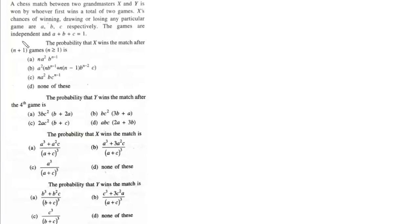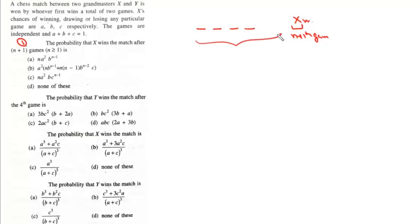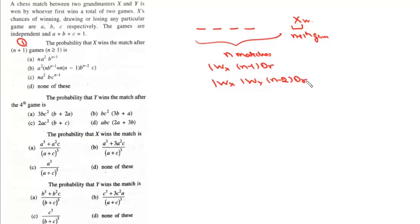First, find the probability that X wins the match after n+1 games. X wins after n+1 games if in the (n+1)th game X wins, and in the remaining n matches there is one win for X and n-1 draws, or one win for X, one win for Y, and n-2 draws. These are the possible ways X can win the match after the (n+1)th game.